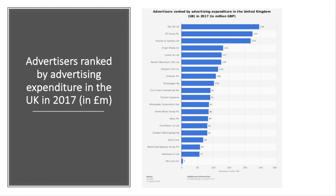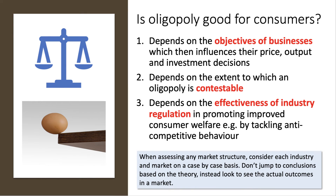So we've been through four advantages and four potential disadvantages of oligopoly. To finish, here are three 'it depends on' evaluation points. The question is: is oligopoly good for consumers? The arguments are finely balanced. First, it depends on the objectives of the businesses — whether they are going for profit maximisation, revenue maximisation, or sales maximisation. Those objectives influence their behaviour, pricing, output decisions, and investment decisions, which clearly then impact on consumers.